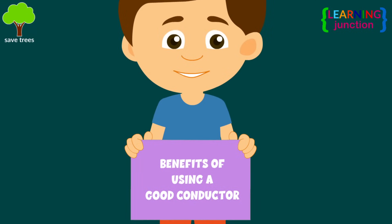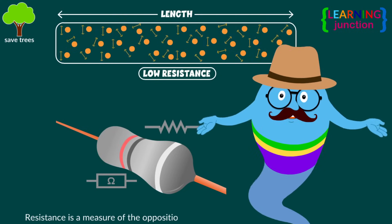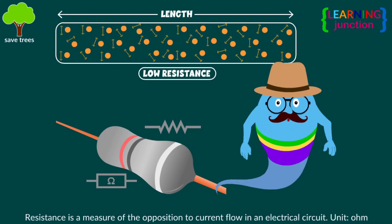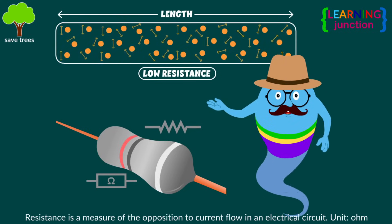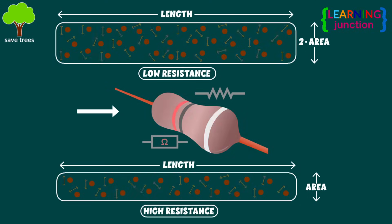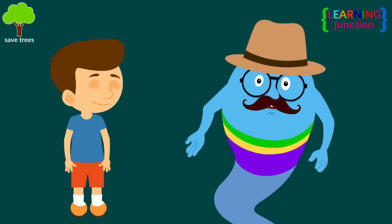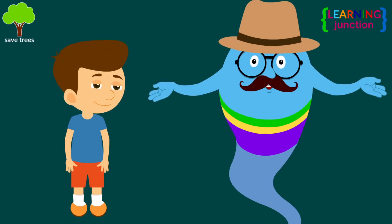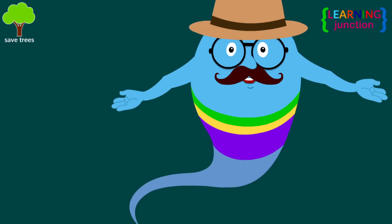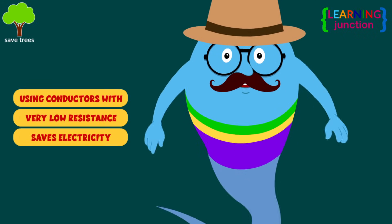Now let's see the benefits of using a good conductor. Good conductors have very low resistance, so electric current can move easily. If a high resistance conductor is selected, it will become piping hot when electric current flows through it. This will waste so much electricity in heating the conductor that would have powered some appliances. Using conductors with very low resistance saves electricity.